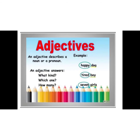Adjectives describe a noun or a pronoun. For example, happy dog — it tells us what kind of dog, and the answer is happy. So the word happy is an adjective. Next, tired boy — what kind of boy? That is tired boy. Seven girls — how many girls? Seven girls.